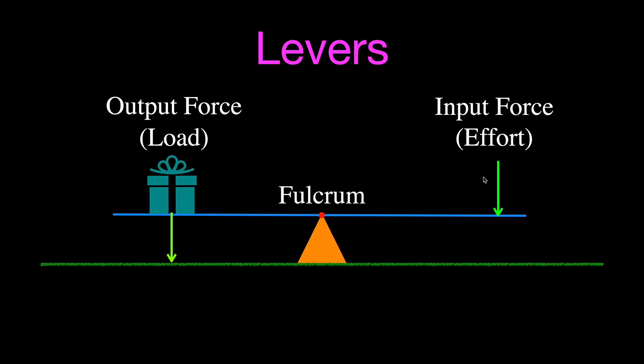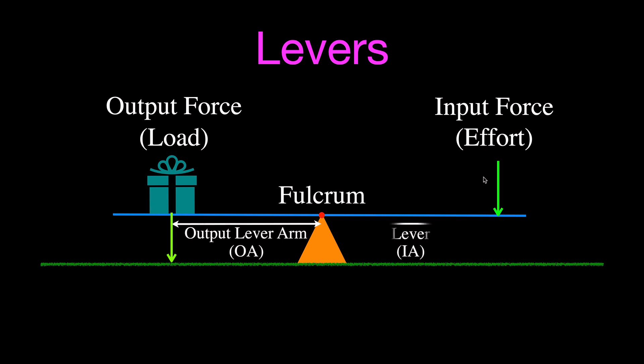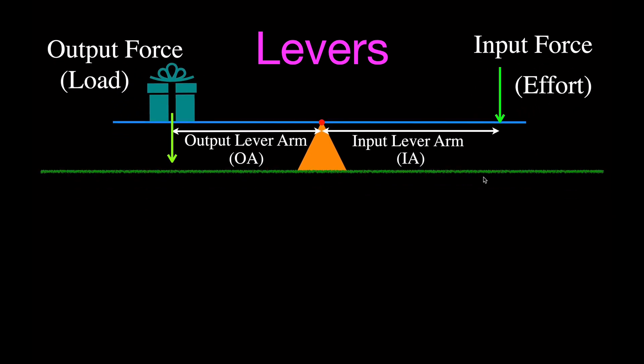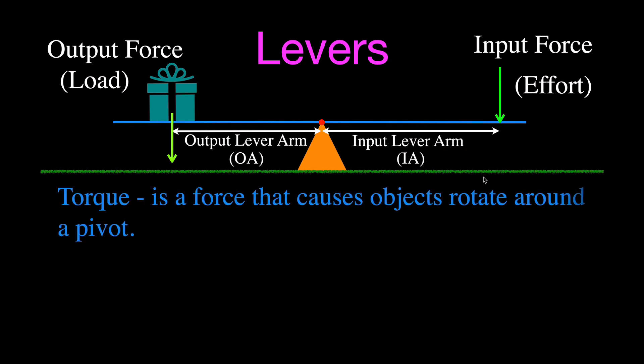And then we have the fulcrum — that's the pivot around which the lever turns. We also have the distance from the fulcrum to each of the forces: we call one the output lever arm and the other the input lever arm. In this video, we're going to use torque to solve for forces and distances, because when the lever balances, the torque on one side is equal to the torque on the other.